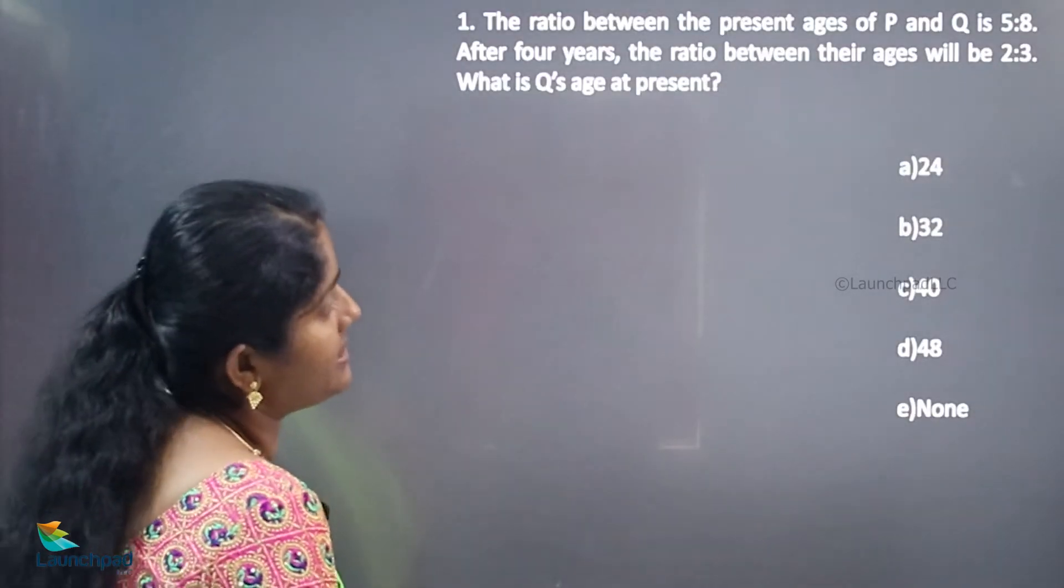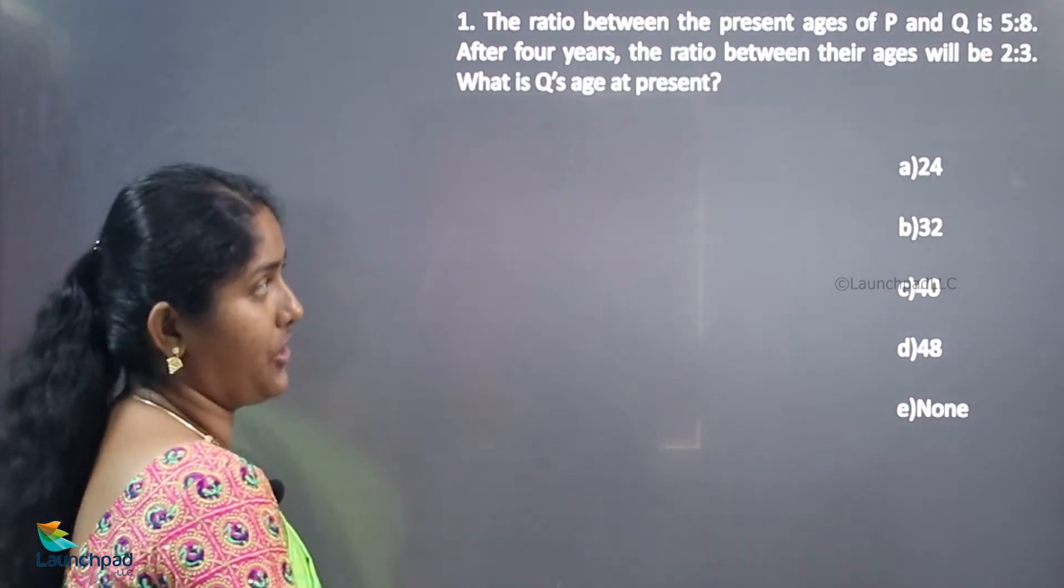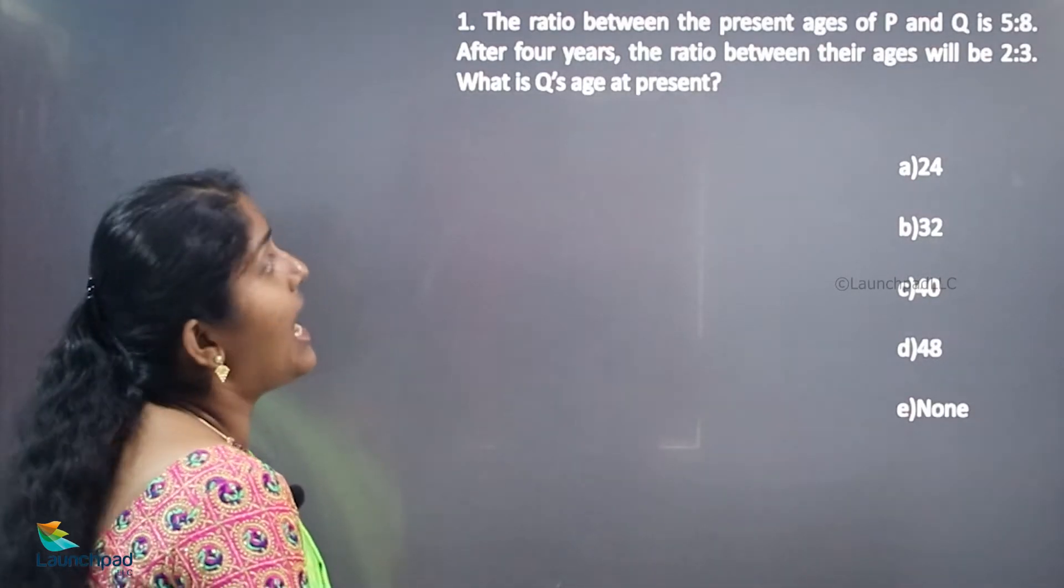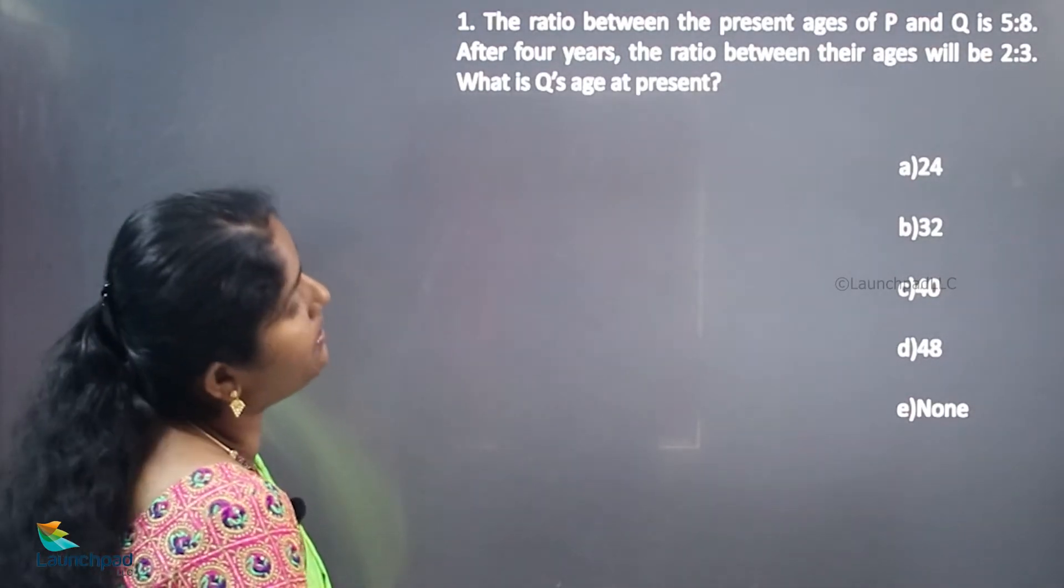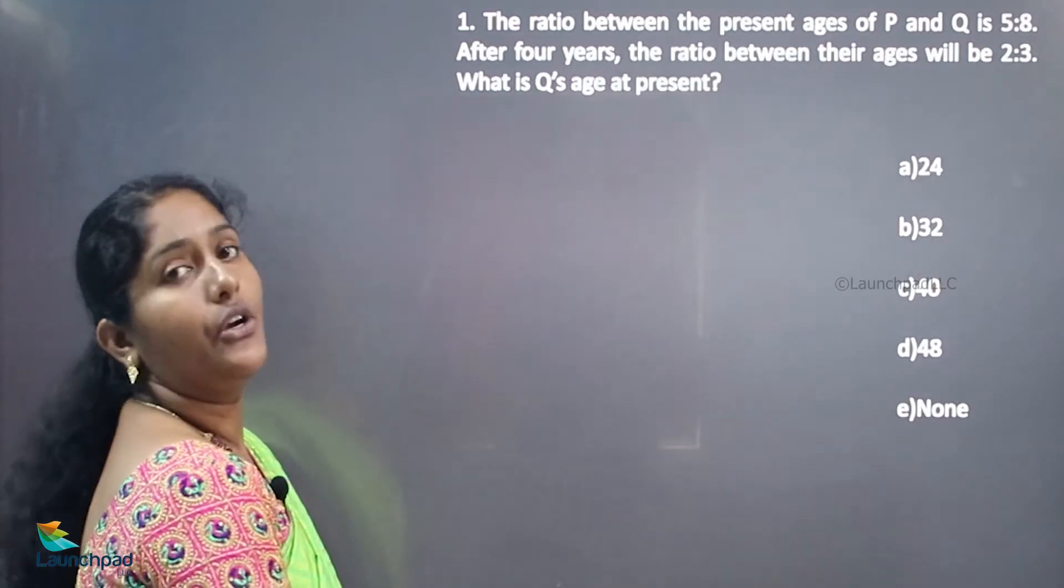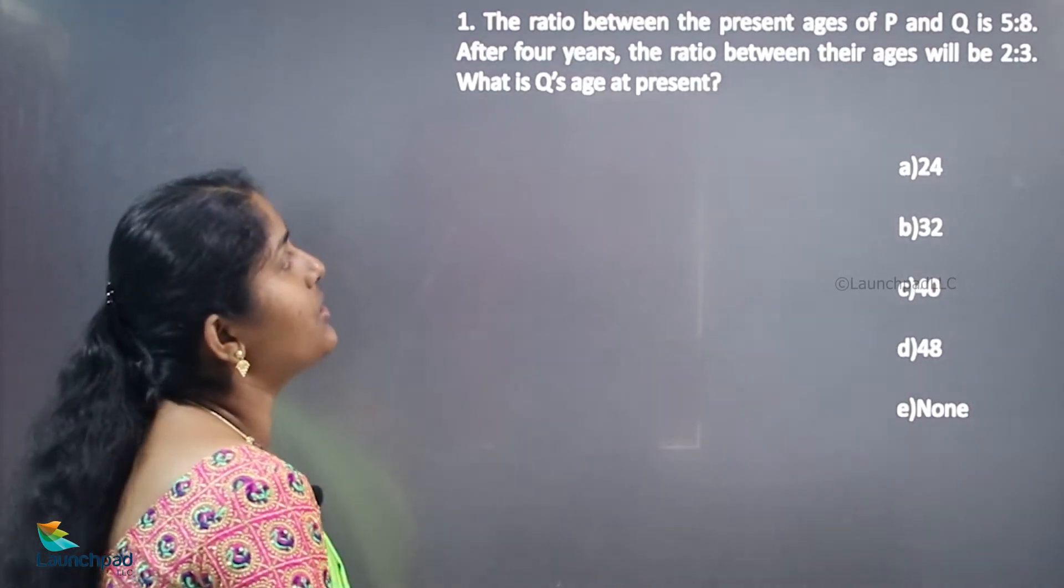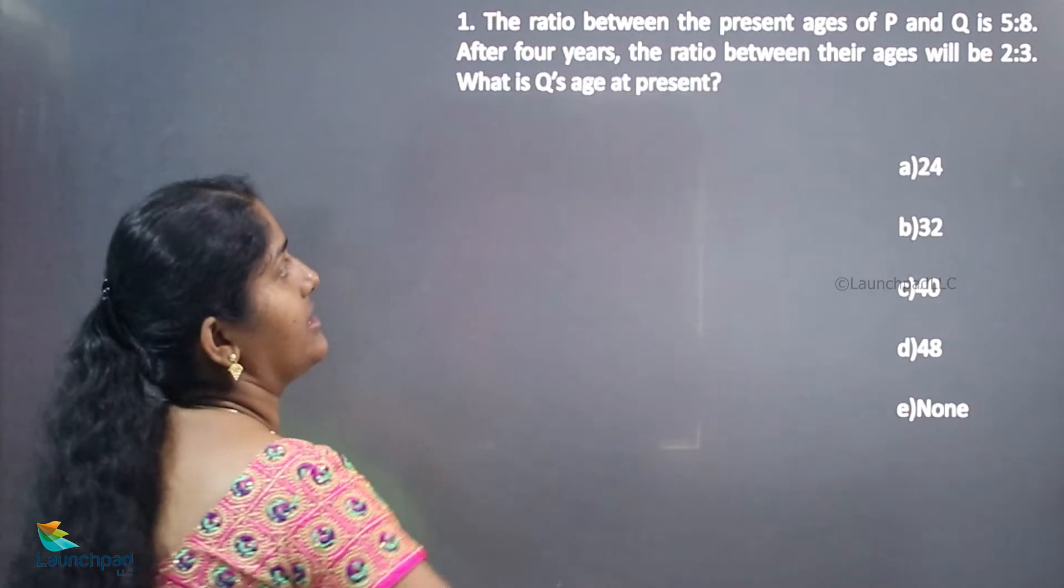The ratio between the present ages of P and Q is 5 to 8. After 4 years, the ratio between their ages will be 2 to 3. What is Q's age at present?